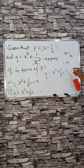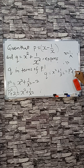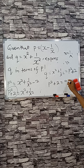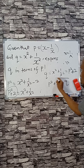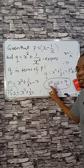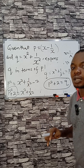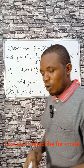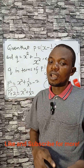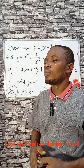So p squared plus two is equal to q — expressed in terms of p, that is the answer. For more problems like this and many more, share and subscribe.